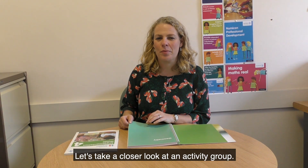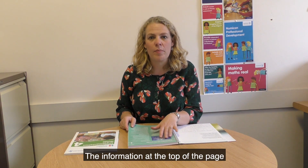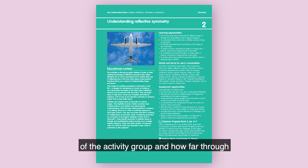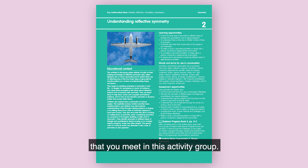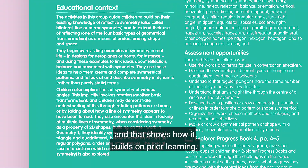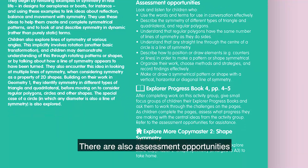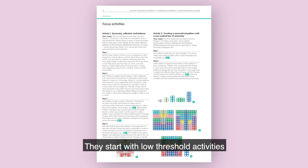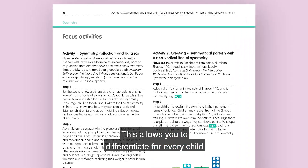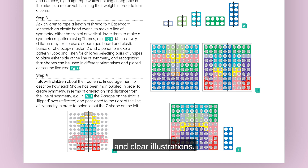Let's take a closer look at an activity group. You will see that the strands are colour coded — geometry is green and measurement is purple. The information at the top of the page helps you to easily identify the context of the activity group and how far through the strand you are. The key mathematical ideas highlight important concepts that you meet in this activity group. There is an overview of the educational context showing how it builds on prior learning; the learning opportunities are drawn from real classroom experiences. There are also assessment opportunities and links to explorer progress books and explore more copy masters. Each activity group includes step-by-step focus activities. They start with low threshold activities and then build to high ceiling activities. This allows you to differentiate for every child in your class within the same activity group. All of them are supported by easy-to-follow instructions and clear illustrations.